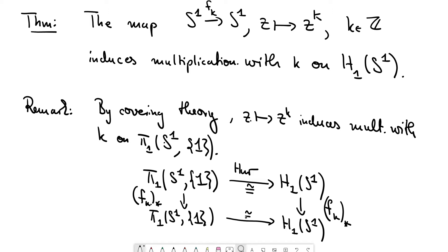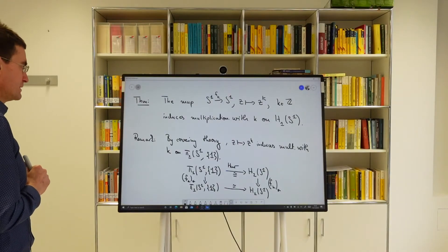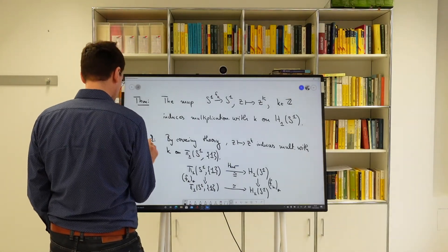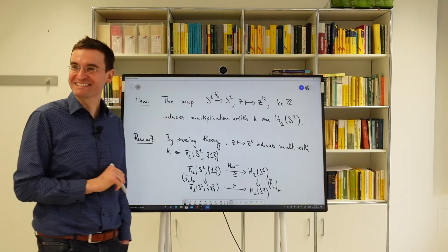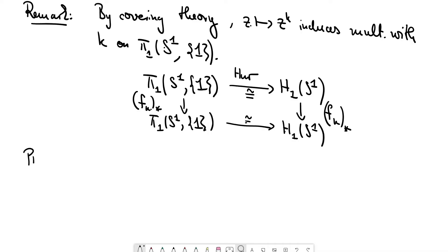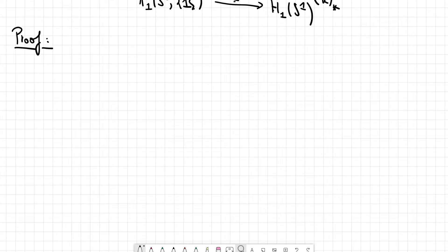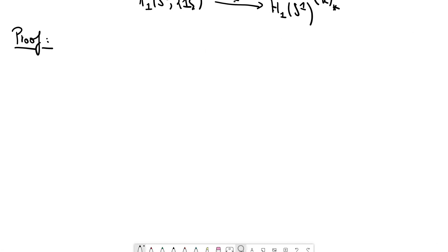Will you assume the dimension axiom? No. And the idea is to factorize this map, z to z^k, over a wedge of circles. All right, so we have factorization.